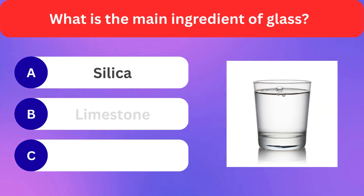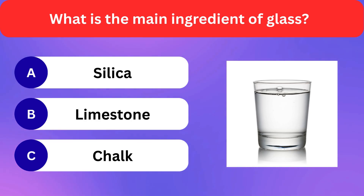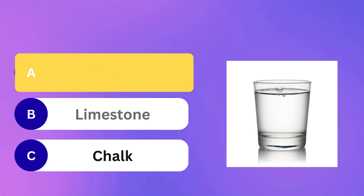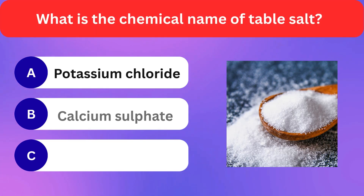What is the main ingredient of glass? Silica, Limestone, Chalk. Correct answer is silica. What is the chemical name of table salt?